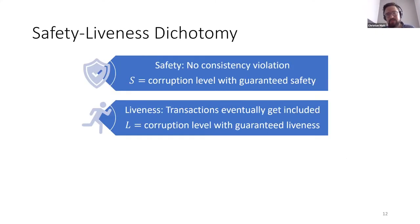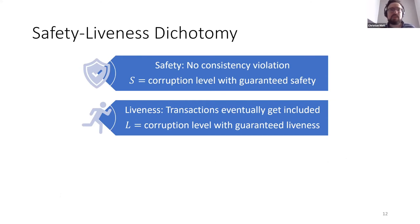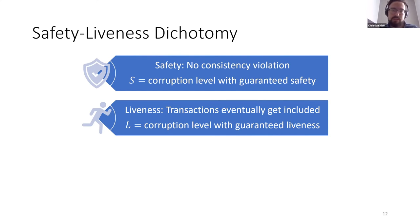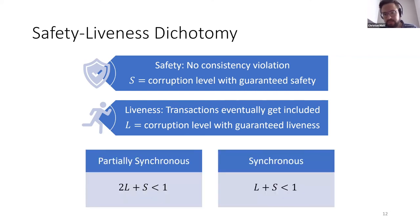That's true, but not completely true, because we can bring in the safety-liveness split mentioned in the title. The idea is that security can be split into two properties: safety and liveness, considered separately. Safety means basically you don't make mistakes — you will never confirm conflicting blocks. Liveness means you keep running: if you submit a transaction, it will eventually get included. You can now have two parameters, S and L, which tell you how much corruption you can tolerate such that safety or liveness is still guaranteed.